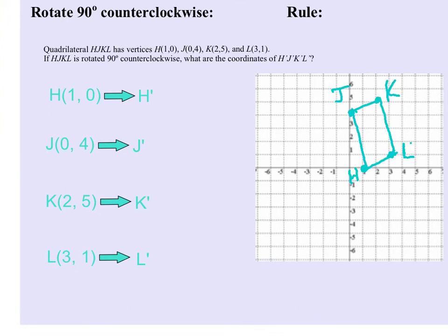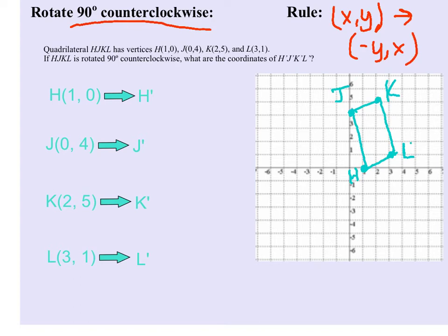For this one, we're going to do our 90 degree counterclockwise rotation. Remember from the first page, the rule is that our pre-image (x, y) is going to become our image (-y, x). If you haven't already, graph H, J, K, and L. Pause the video if you need to put your points on the graph. Then we're going to come over here and use the rule to change H into its image, H prime.